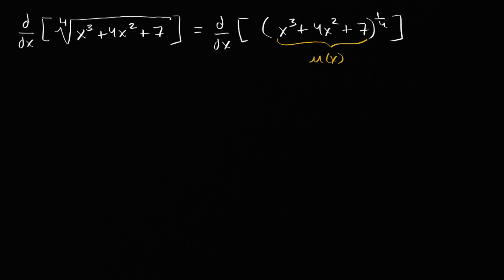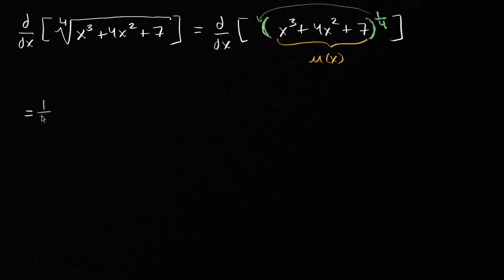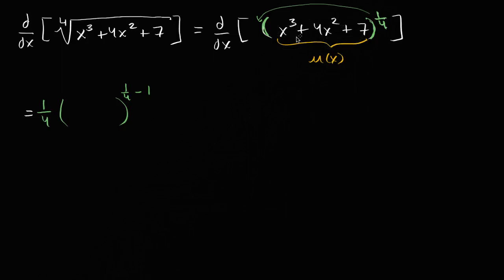This is going to be equal to: we take our outside function — the part where I take something to the one-fourth — and take the derivative of that with respect to the inside, with respect to u of x. Using the power rule, I bring that one-fourth out front: one-fourth times whatever I'm taking the derivative with respect to, to the one-fourth minus one power. So that gives us one-fourth times x to the third plus four x squared plus seven.